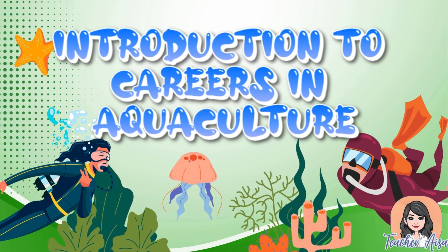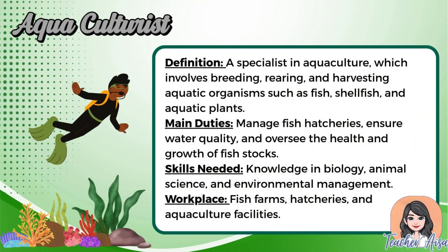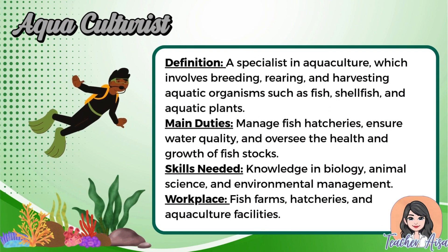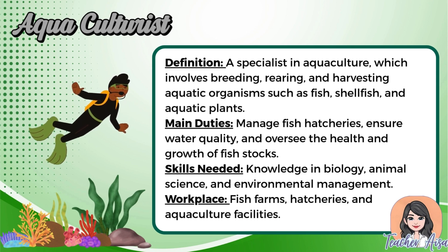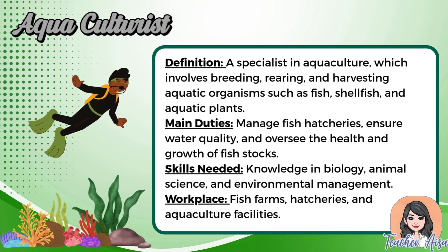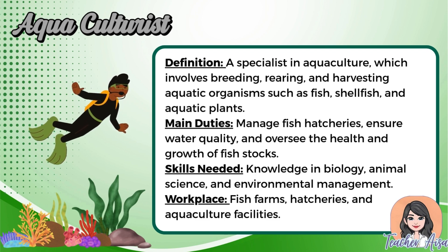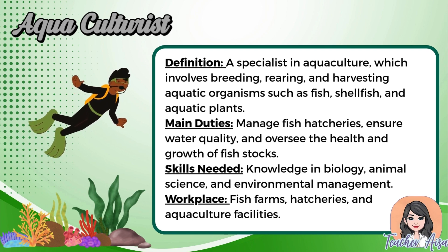First, we have the aquaculturist. This is a specialist who focuses on breeding, rearing, and harvesting aquatic organisms like fish, shellfish, and aquatic plants. Their main work includes managing hatcheries, checking water quality, and making sure the fish stocks are healthy and growing. To succeed, you need knowledge in biology, animal science, and environmental management. Aquaculturists usually work in fish farms, hatcheries, and aquaculture facilities.